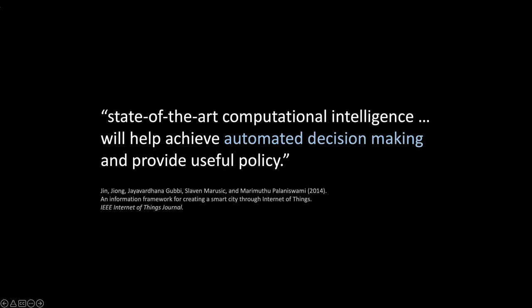Considering the mass of data throughputs generated by the IoT, Gin and colleagues observed that to make sense of the information and convert it into knowledge, state-of-the-art computational intelligence techniques — such as genetic algorithms, evolutionary algorithms, and neural networks — are necessary. Machine learning, they conclude, will help achieve automated decision-making and provide useful policy. Their vision would seem to exemplify fast urbanism.